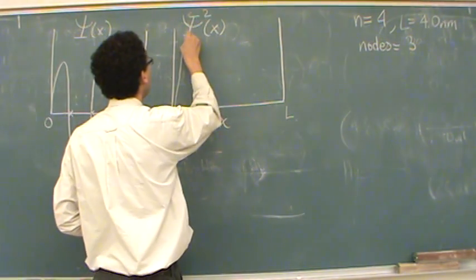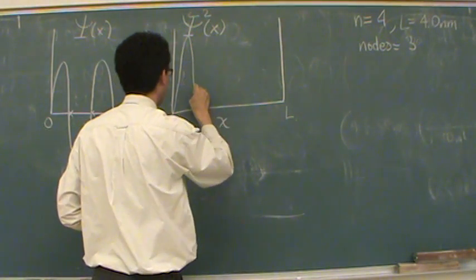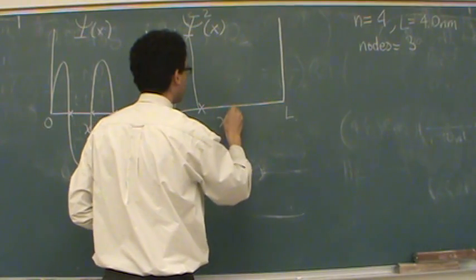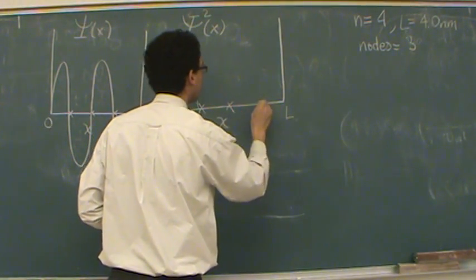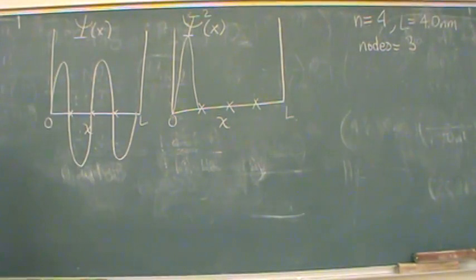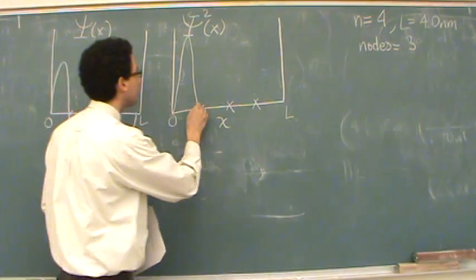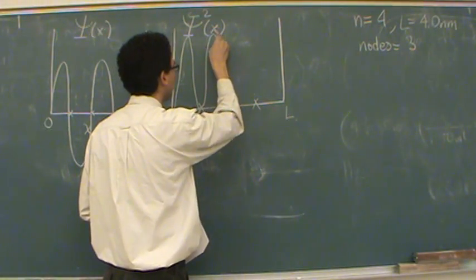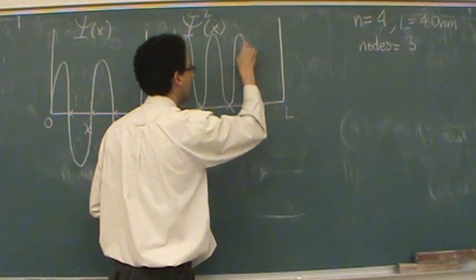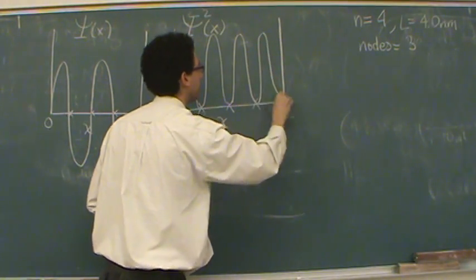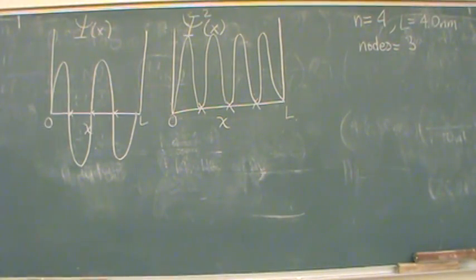So, this will go up, higher, and down. If we square zero, what do we get? Zero. Zero, so the nodes will continue to exist. Square a negative number, get a positive number of equal height. And again positive, and again positive.